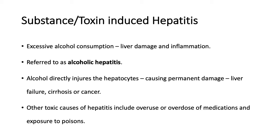Substance-induced or toxin-induced hepatitis is generally caused by consumption of certain substances that can damage the liver. The classic example is alcohol consumption, where excessive alcohol consumption can result in liver damage and inflammation, referred to as alcoholic hepatitis. Alcohol directly injures the hepatocytes and causes permanent damage that can amount to liver failure, cirrhosis, or even cancer. Other toxic causes generally include overuse or overdose of medications and exposure to poisons.